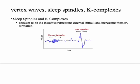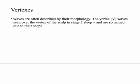He had vertex waves, sleep spindles, and K-complexes. The sleep spindles and K-complexes are generated in the thalamus. They do two things: they stop external stimuli from waking you up, and they increase memory formation. Vertex or V-waves are seen over the vertex of the scalp in stage 2 sleep. All of these findings together indicate he was asleep — at least in stage 2 sleep.